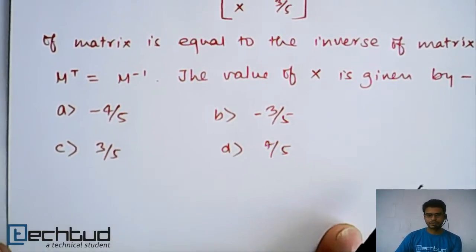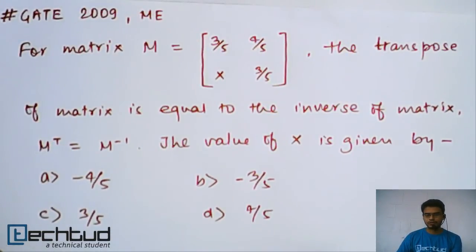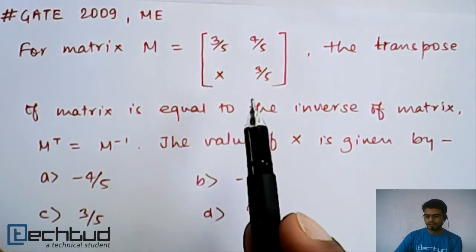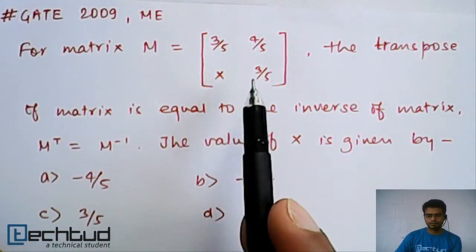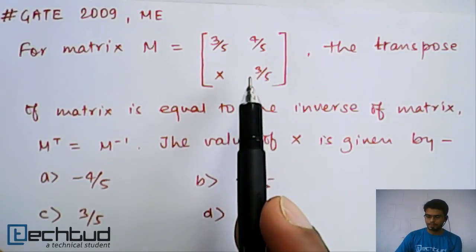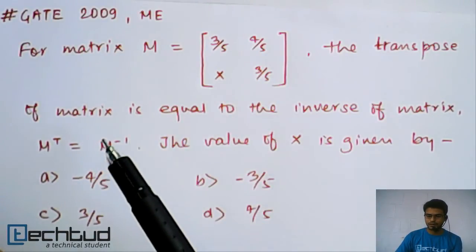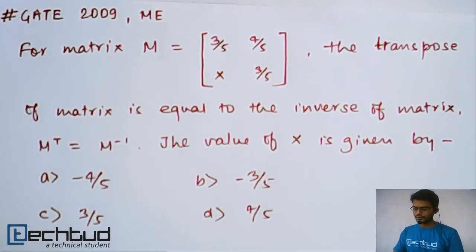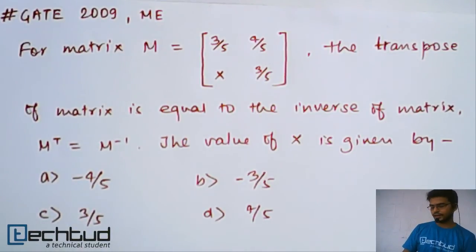Now they have given four options and we have to solve it. So what you will do? The simple approach is like you take transpose of this and you find out inverse of this and go for equating them and solving them.